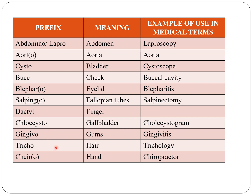Gingivo indicates gums, as in gingivitis. Tricho indicates hair, as in trichology. Cholecysto indicates gallbladder, as in cholecystogram. Cheir indicates hand, as in chiropractor, whereas cheil indicates lips.